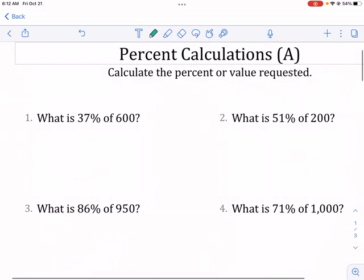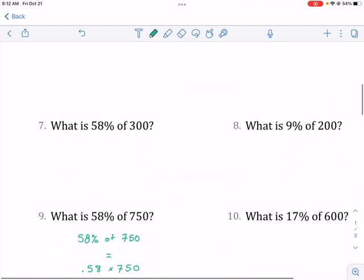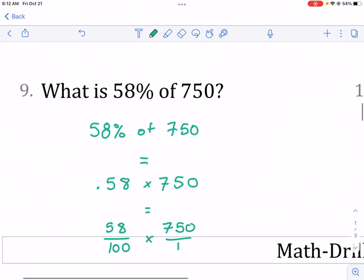So first off, when we're calculating percentages, let's understand what we're talking about. What is 37% of 600 is the first question. Let's actually go down here for question nine. What is 58% of 750?